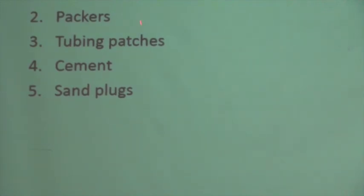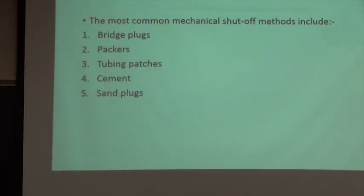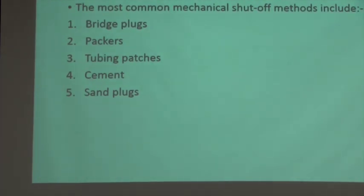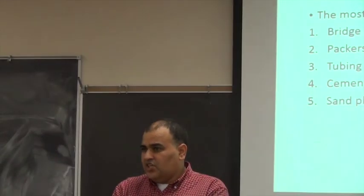Mechanical methods include bridge plugs, packers, tubing patches, cement, and sand plugs. All of these work to decrease unwanted water production - either by injecting cement to block the high-permeability formation, or by installing a packer between the high-permeability and low-permeability formations to isolate the water zone. These are used in the oil industry because they are relatively cheap. However, cement and sand plugs could potentially affect the low-permeability formation if the two layers are connected.